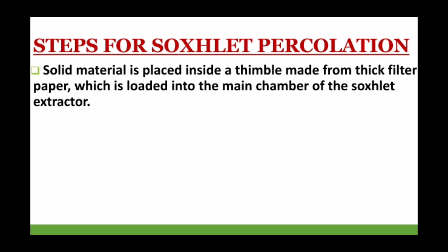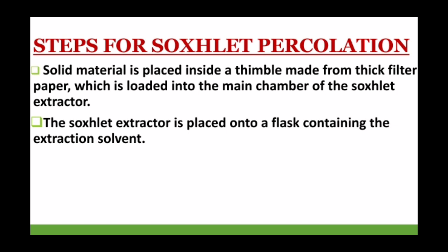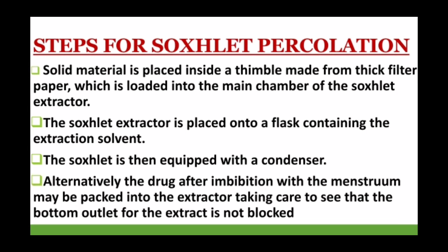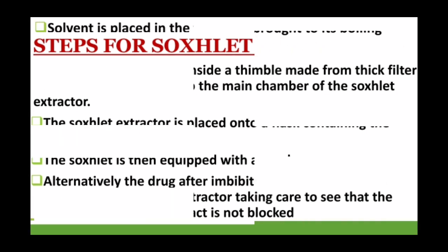In Soxhlet percolation, the solid material — the crude drug — is placed in a thimble made of thick filter paper. The drug is loaded into the Soxhlet extractor's main chamber, which is then attached to a flask. The flask contains the extraction solvent and the Soxhlet extractor contains the crude drug. A condenser is attached on top. We ensure the drug has undergone imbibition — meaning the drug has properly absorbed the menstruum — and we check that no outlet of the extractor is blocked.